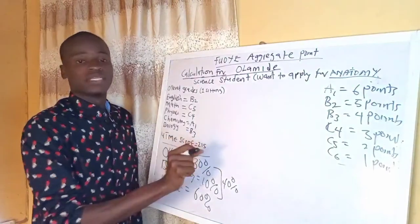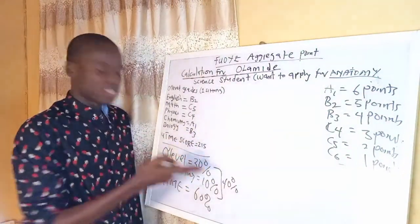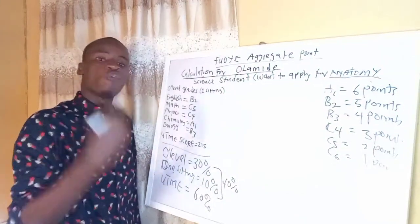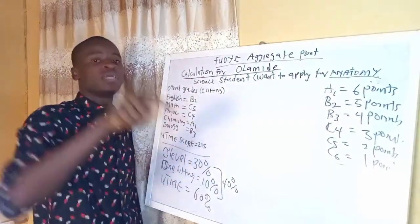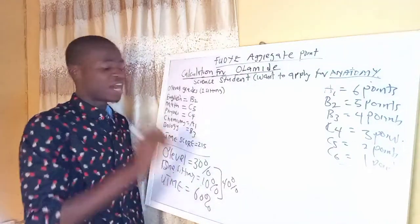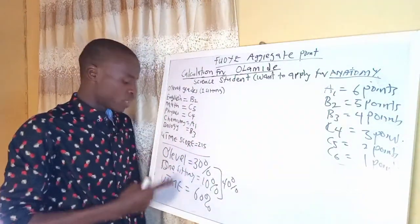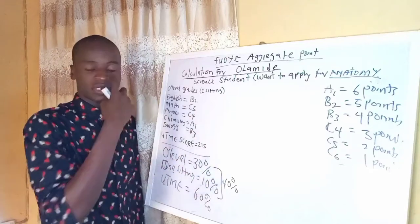Mind you, for O-level in FUOYE, the O-level is 30 percent. If you have one sitting, it's 10, and for UTME is 60. For a candidate having one sitting of O-level, it means it is 40 percent. Now if you are having more than one sitting for O-level, it means you have already lost the one sitting point, which is the 10 percent of the aggregate.